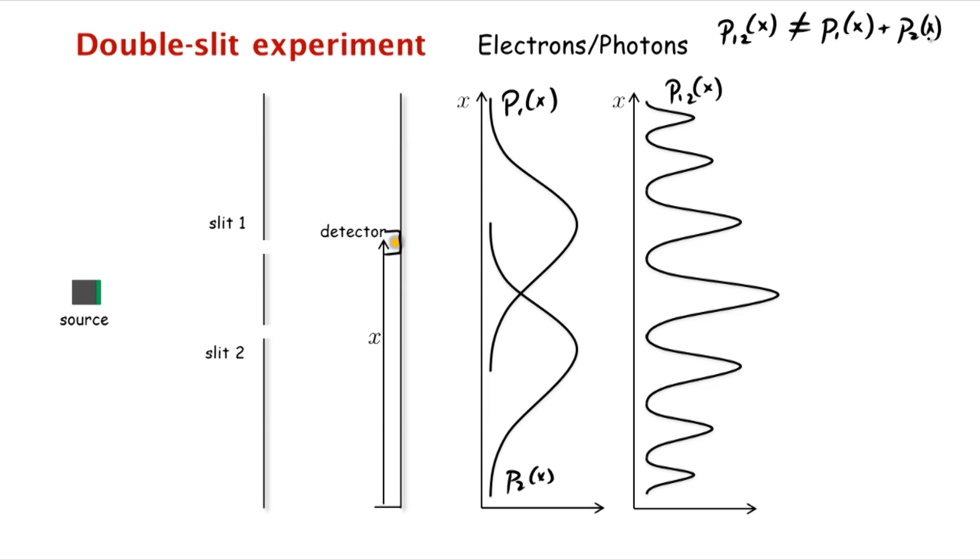And of course, our mystery is how could it be that this packet, this discrete packet, went through either slit one or slit two, and the probabilities did not add up. So the mathematics behind this is very simple. The mathematics is just like that for water waves.